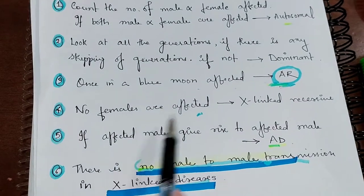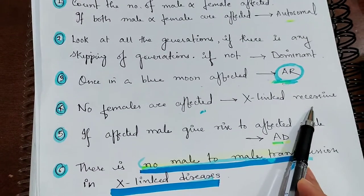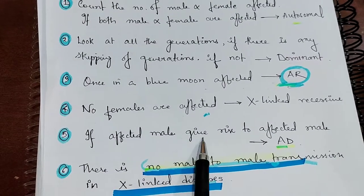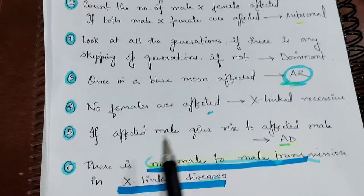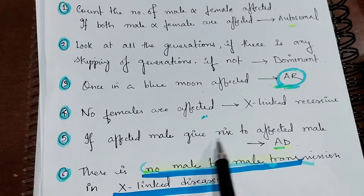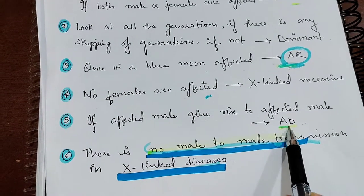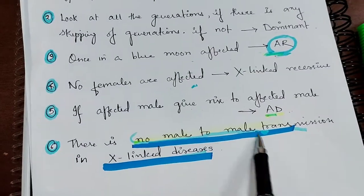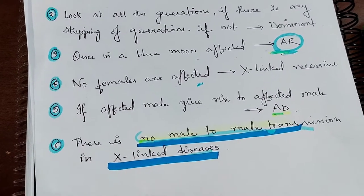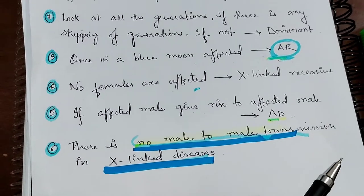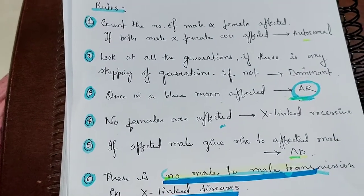This rule is very important: if no females are affected at all, that is an X-linked recessive disease. If an affected male gives rise to an affected male — male-to-male transmission — that is autosomal dominant. There is no male-to-male transmission in X-linked disease, whether it is X-linked recessive or X-linked dominant. Keep these rules in mind when you see a pedigree chart.